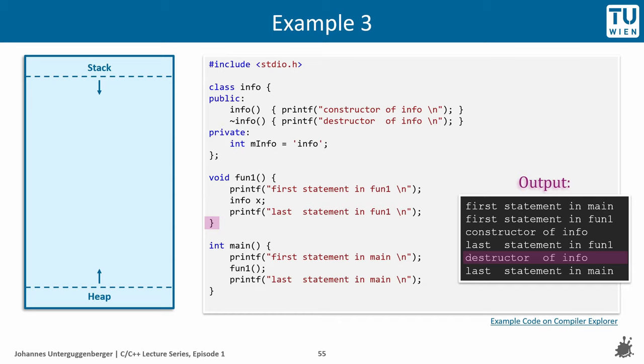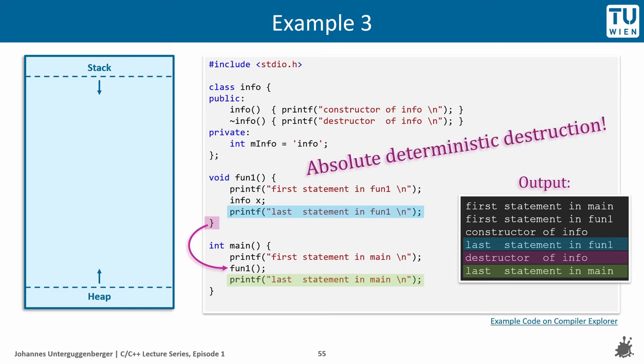And the order, when exactly the destructor of info is invoked, is absolutely deterministic. It is invoked after the last statement in fun1, when the block of fun1 has ended. Then the control flow returns to the main function. And we can see that the destructor has been invoked before last statement in main was printed. This is what you can expect always in 100% of cases. This does not depend on the compiler or on optimization levels. We have absolute deterministic destruction here.